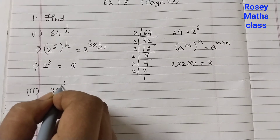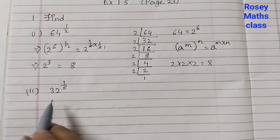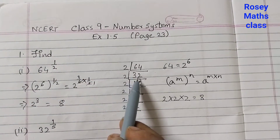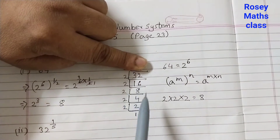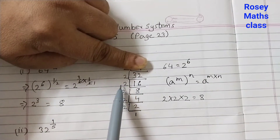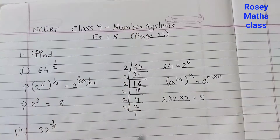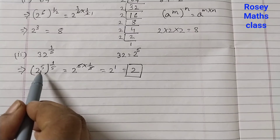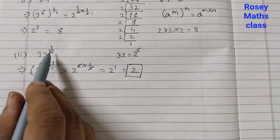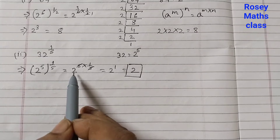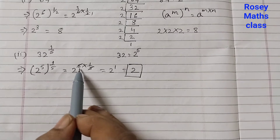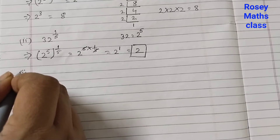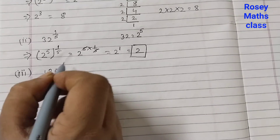Second part: 32 to the power of 1/5. We find the prime factors of 32: 32 ÷ 2 five times gives us 2^5. So (2^5)^(1/5) — applying the law of exponents, 5 × 1/5 cancels out, giving us 2 to the power of 1, which equals 2.